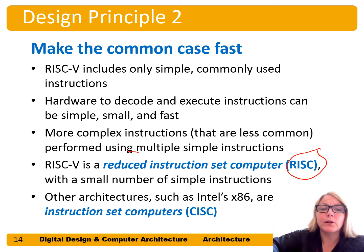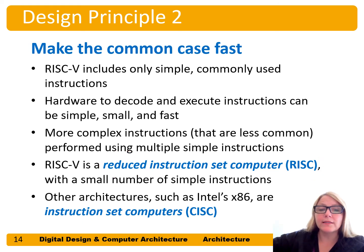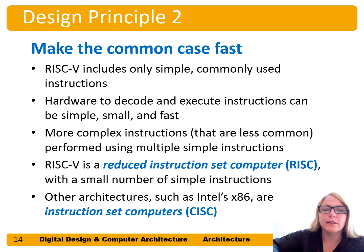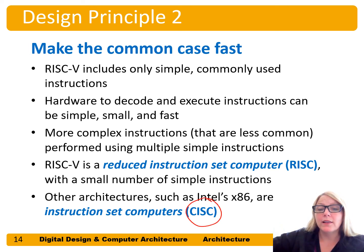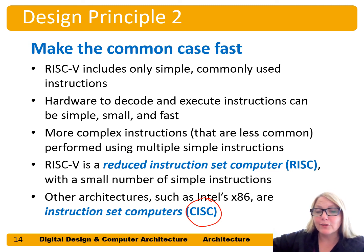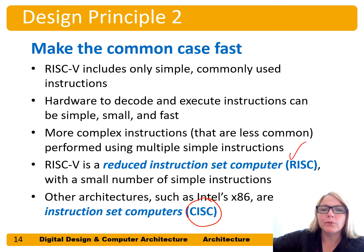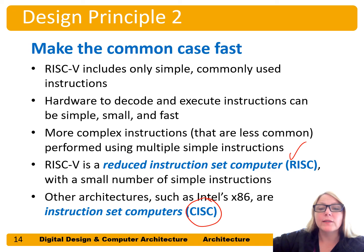This is called a Reduced Instruction Set Computer, or RISC, because it has a small or reduced number of instructions. This is as opposed to CISC architectures — Complex Instruction Set Computers — such as Intel's x86, where the number of operands varies widely and there are a large number of instructions. Instead, we opt for a RISC architecture where we stick to a small number of simple operations.